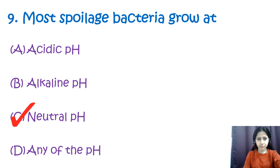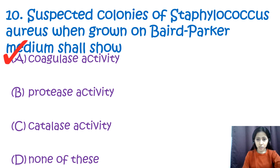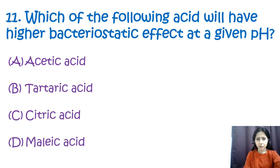Question number ten: suspected colonies of Staphylococcus aureus when grown on Baird-Parker medium shall show option A: coagulase activity, option B: protease activity, option C: catalase activity, and option D: none of these. The correct answer is option A — coagulase activity. Baird-Parker agar is a selective and differential medium used for the isolation and enumeration of coagulase-positive Staphylococcus in food.